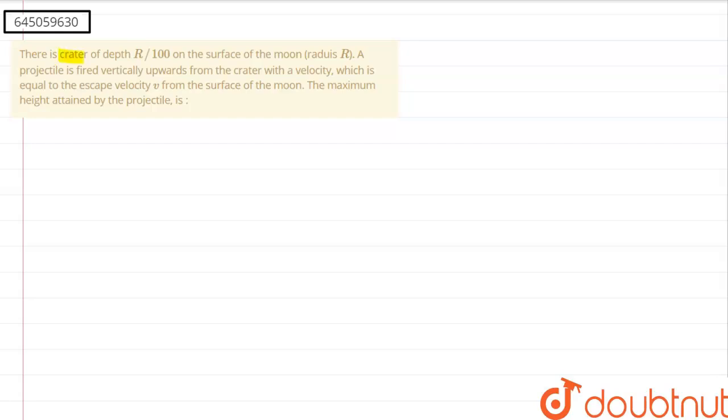The question says there is a crater of depth r by 100 on the surface of the moon of radius r. A projectile is fired vertically upwards from the crater with a velocity which is equal to escape velocity ve from the surface of the moon. We have to find the maximum height attained by the projectile.